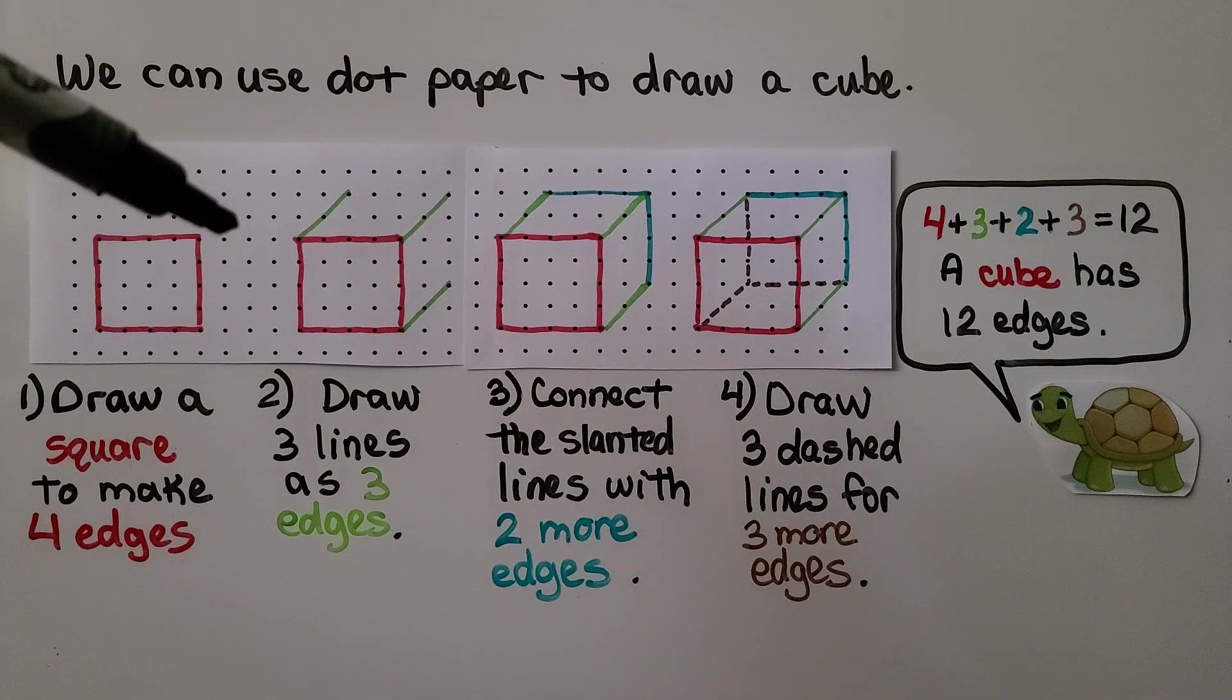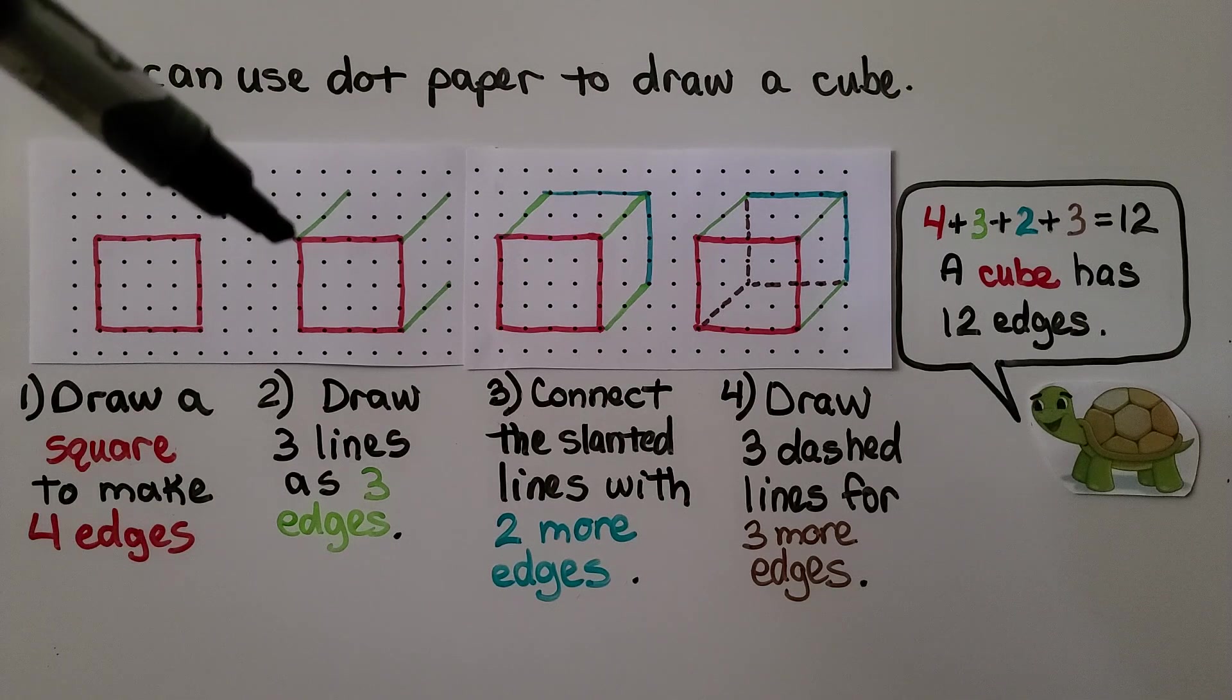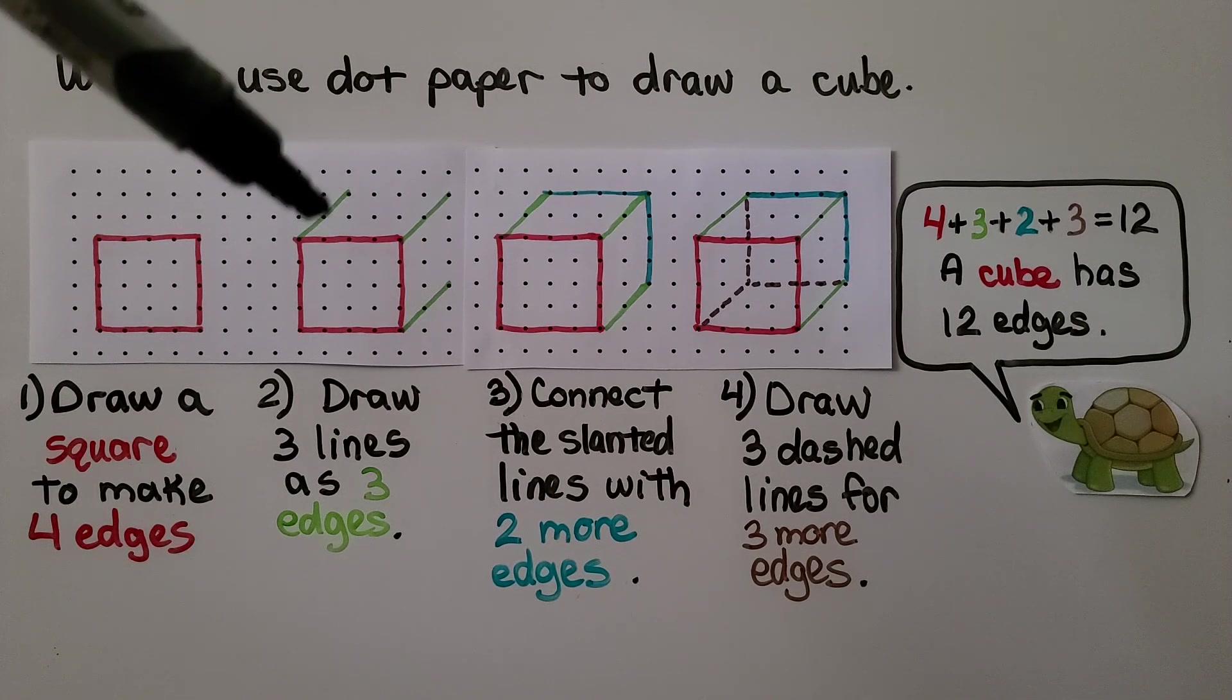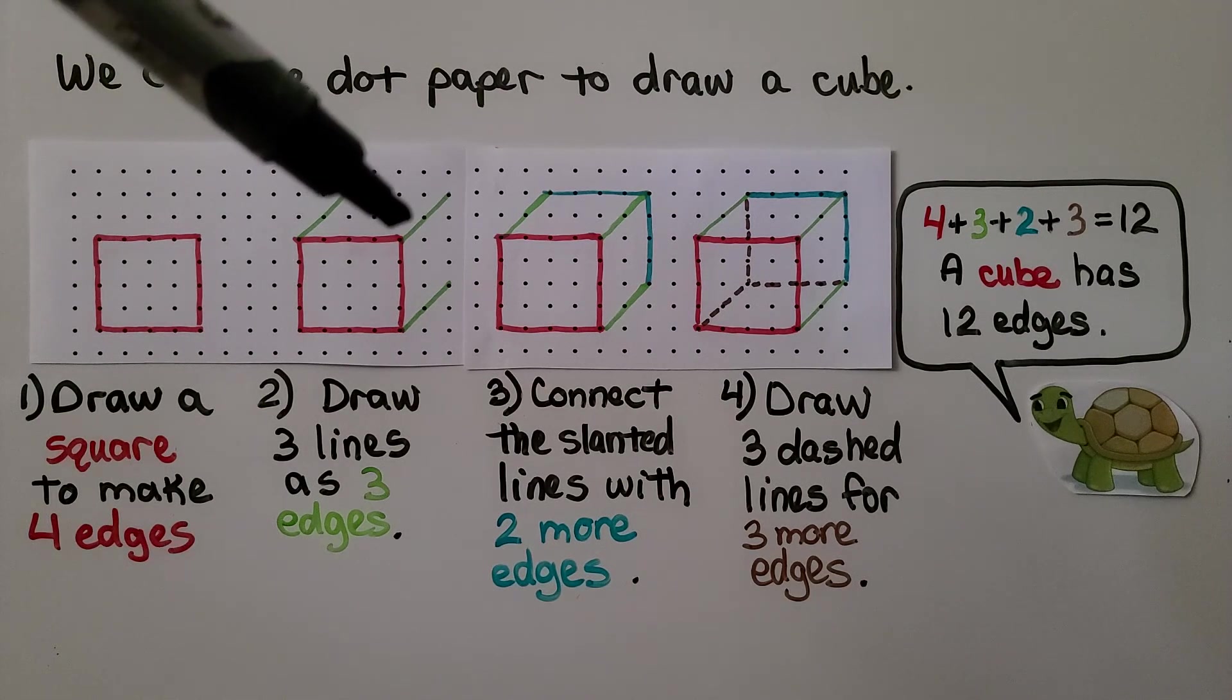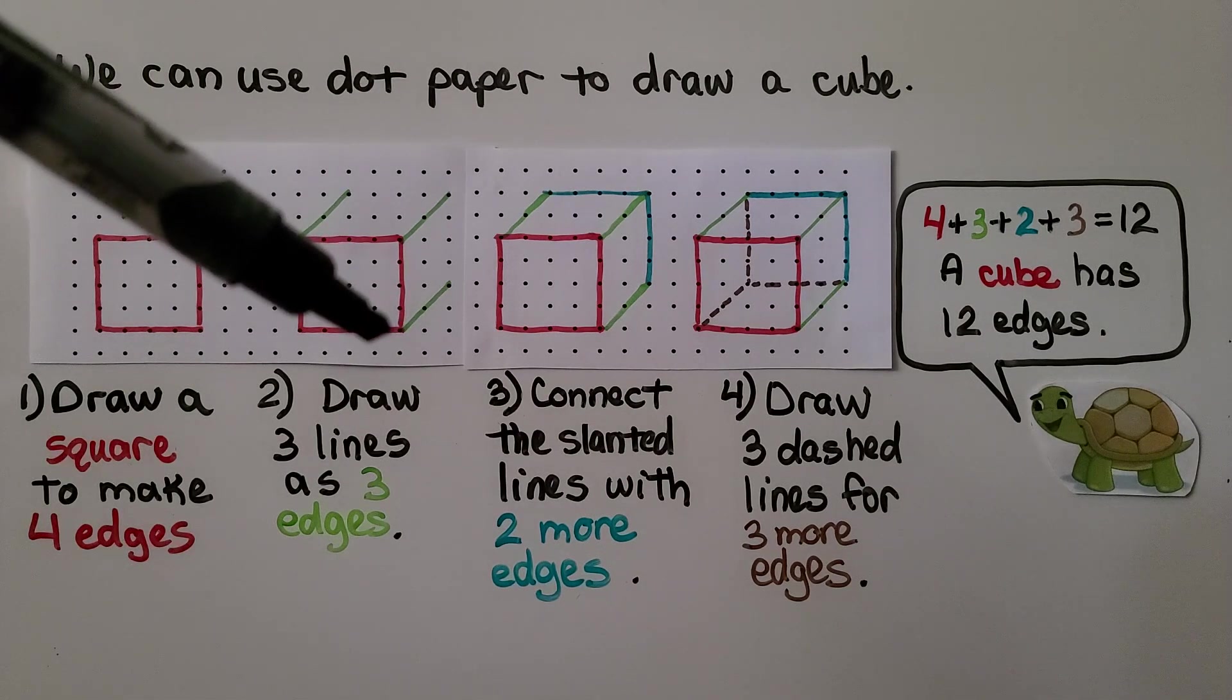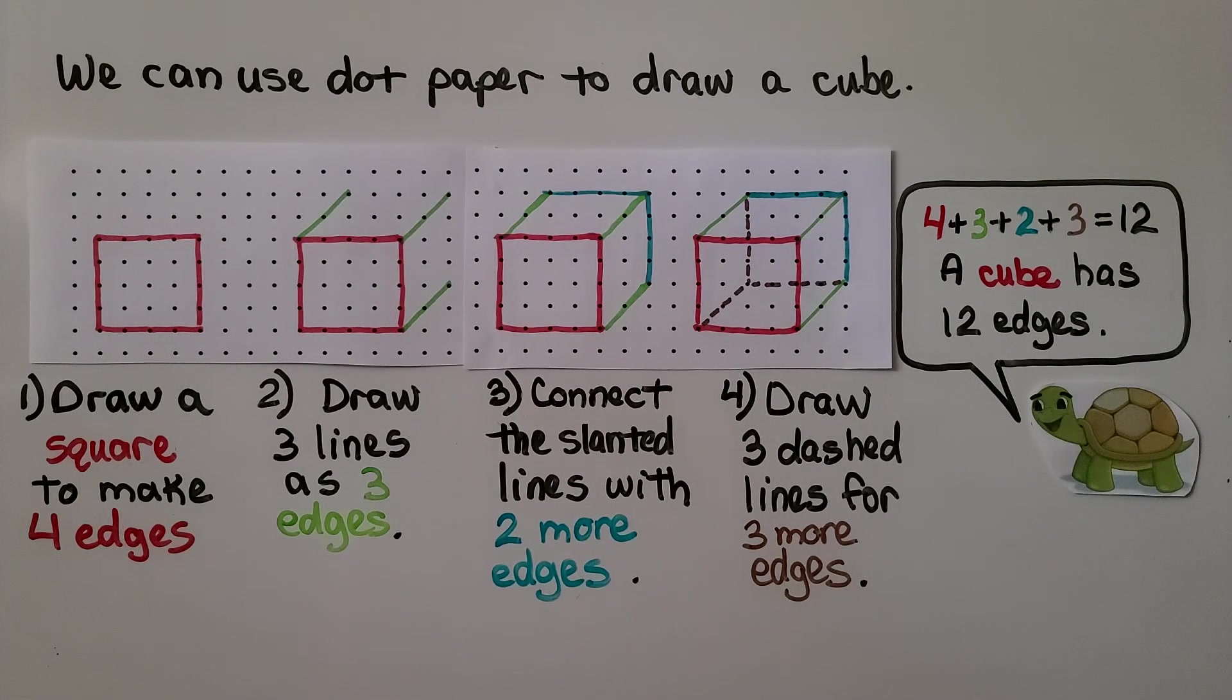The second thing we do is draw three lines going on an angle. See how it starts at this corner, it goes through that dot and then to that dot. And I did the same thing here on this corner. I went through this dot to that second dot, and I did the same thing here. I went up on an angle, on a slant, through this dot, and then that one. We make three more edges.